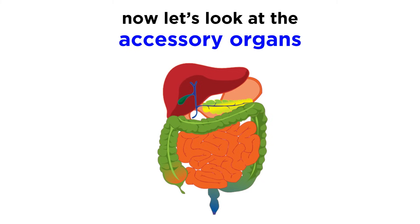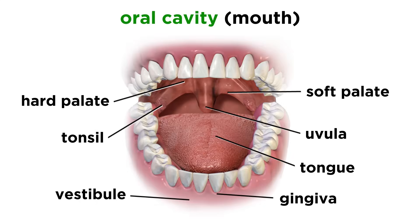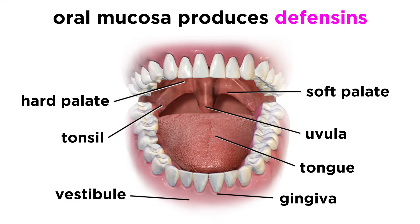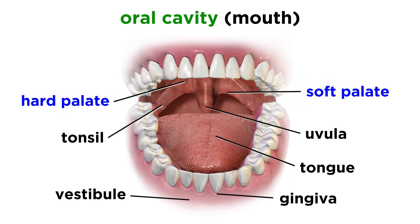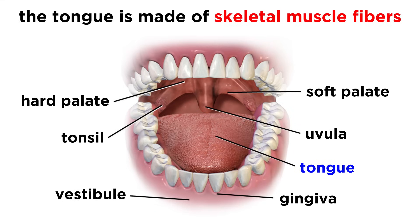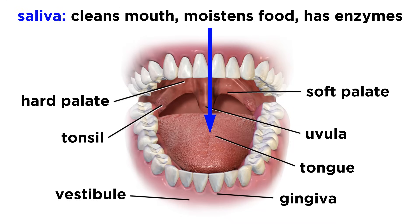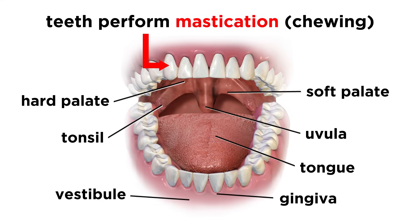Now that we have the basics down regarding the GI tract, let's look at the accessory organs. We already talked a bit about the mouth, or the oral cavity, when discussing the sense of taste, so here we will just highlight the features relevant to digestion. The walls of the mouth are lined with a thick stratified squamous epithelium, and the oral mucosa saliva produces antimicrobial peptides called defensins, since this region will need a lot of protection from the elements. We can also see the hard and soft palate, the uvula, and the palatine tonsils. The tongue is made of skeletal muscle fibers, and is secured to the floor of the mouth by the lingual frenulum. Salivary glands produce saliva, which cleans the mouth, moistens and dissolves food, and contains enzymes that begin breaking down certain foods. Teeth also help this process during mastication, or chewing, which grinds food down into smaller pieces.